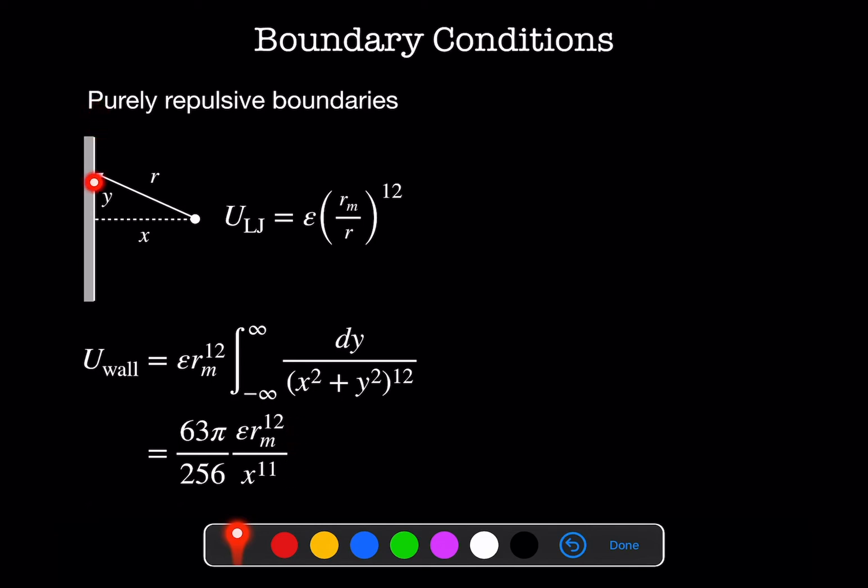And I end up with this term here to get r_m to the 12th divided by x to the 11th. And so I can take an infinite boundary on one side, an infinite boundary on the other, one on the bottom and one on the top, add all of those together and I end up with a confining box.